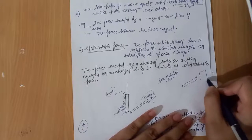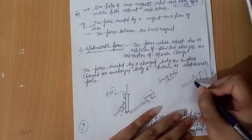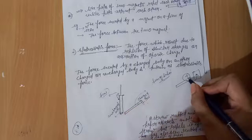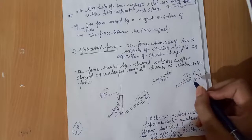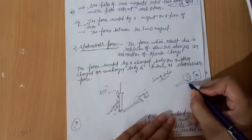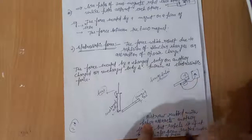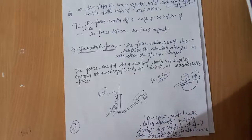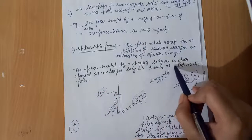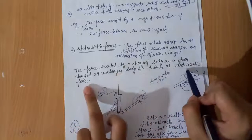When a straw is rubbed with a paper surface, it gets charged. If the straw carries a positive charge, it means it has transferred its electrons into the piece of paper. If an object has a negative charge, it means it has gained electrons from the other object. The force exerted by a charged body on another charged or uncharged body is known as electrostatic force.